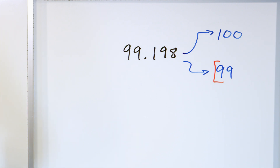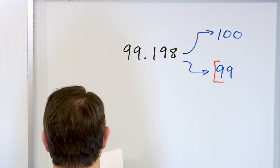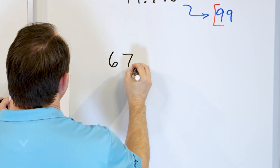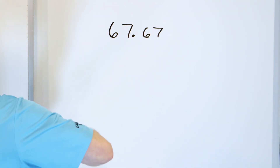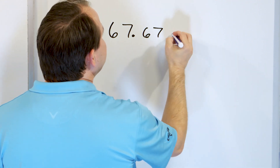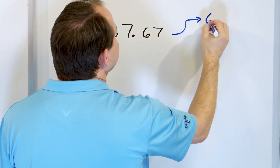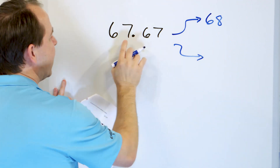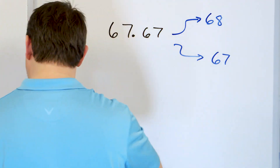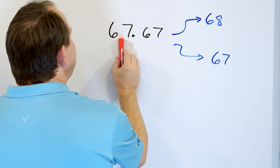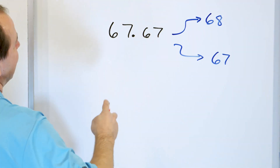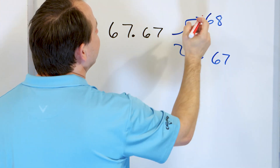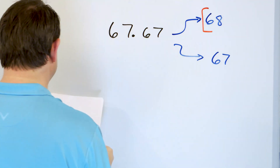These go a lot faster once we get going. Let's take a look at 67.67. The whole number is 67, so we can either round up to 68 or round down and stay at 67. We look at the tenths position just past the decimal — that's a 6, which is larger than 5, so we round up to 68.